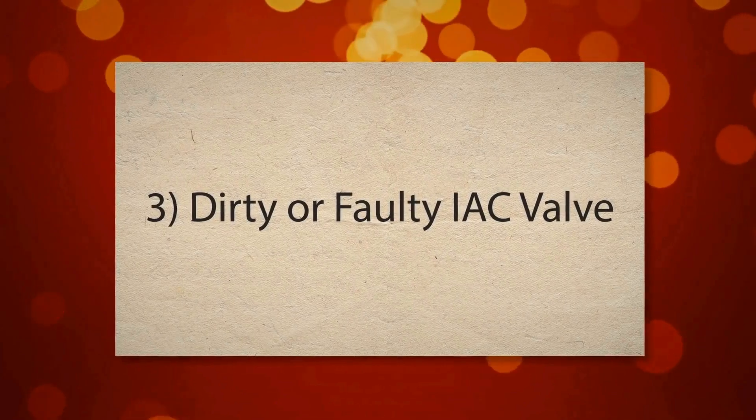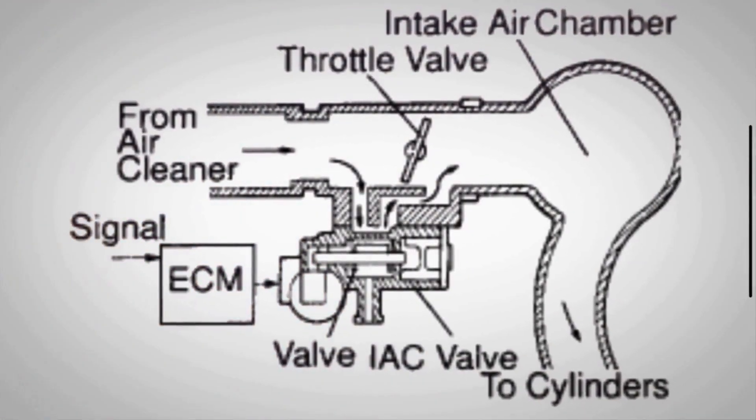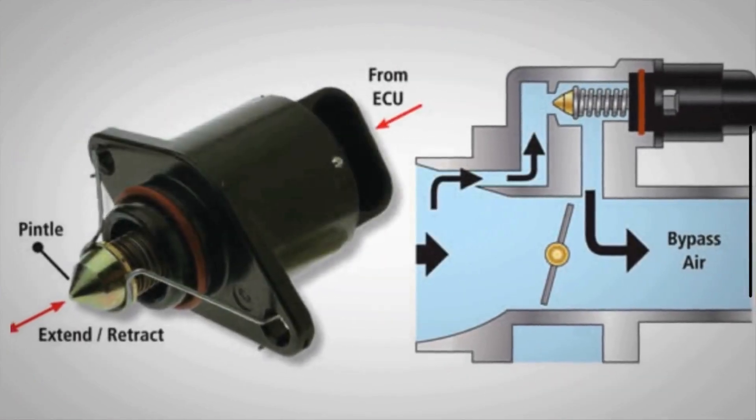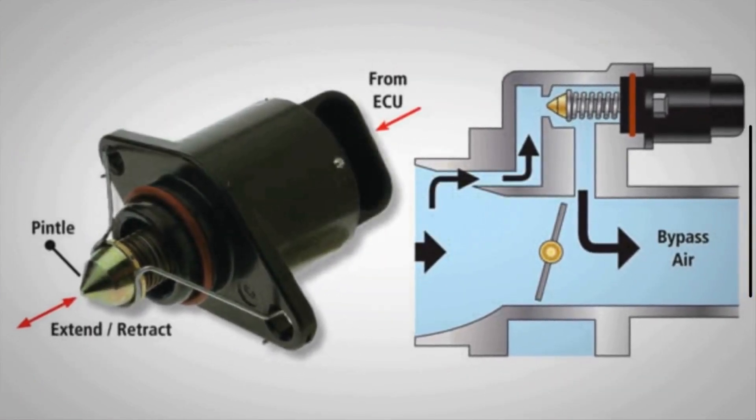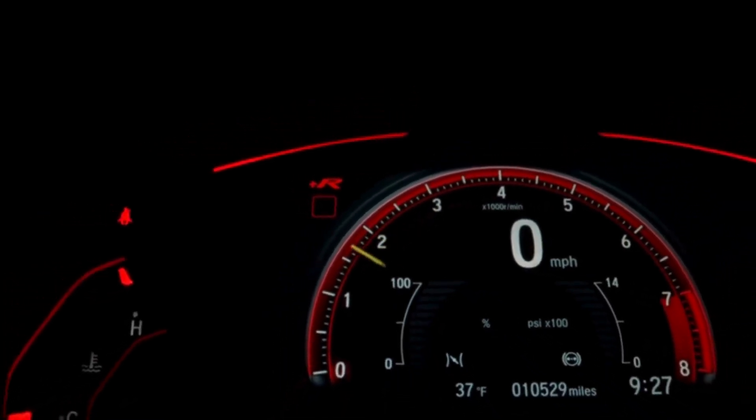3. Dirty or Faulty IAC Valve. The IAC valve manages the engine's idle speed by regulating the amount of air entering the engine. If the valve is dirty or malfunctioning, it may not adjust the idle speed correctly to compensate for the increased load from the AC. This leads to rough idling and shaking.